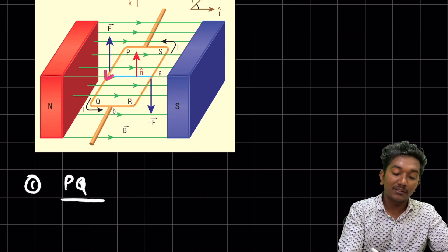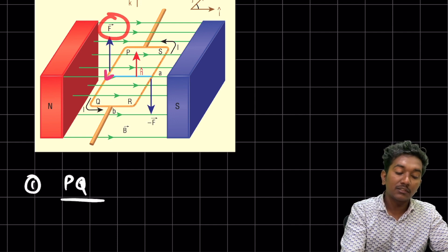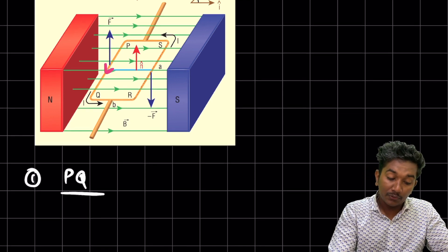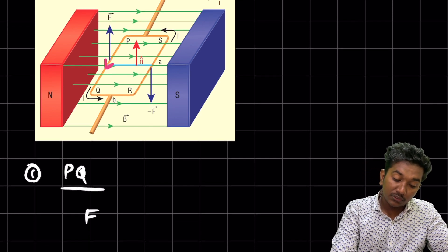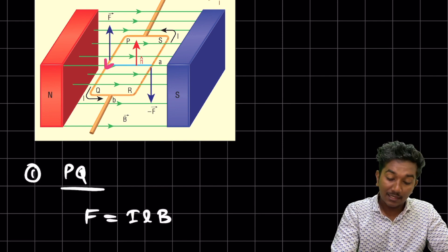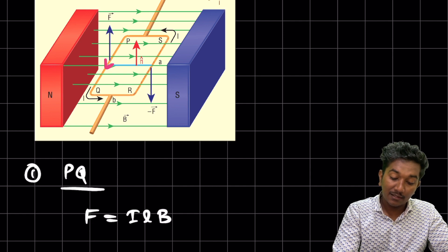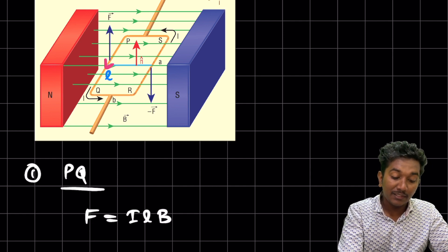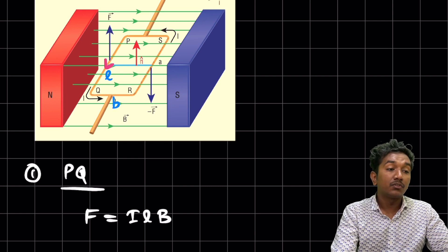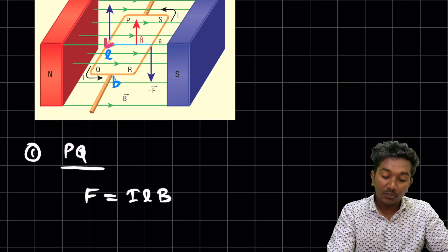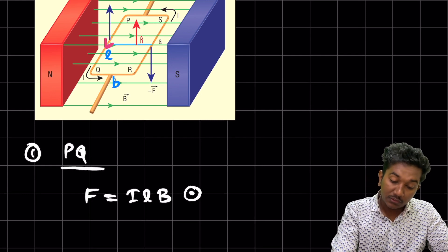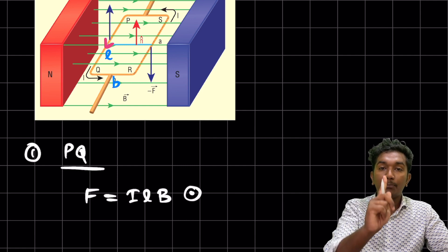Applying the rule: the magnetic field is in that direction, current is in this direction, so the thumb points upwards — the force is upwards. The magnitude of the force is F = ILB, where the length is L and the breadth is B. The direction is upwards, which I'll indicate with a dot (out of the page, +z direction).